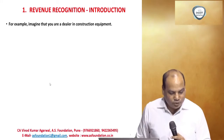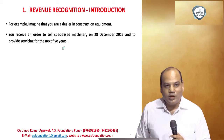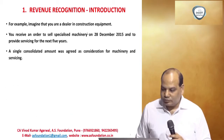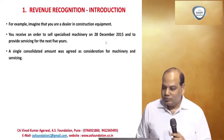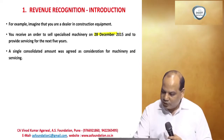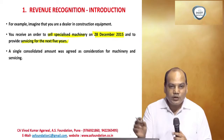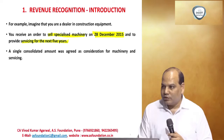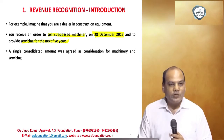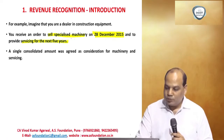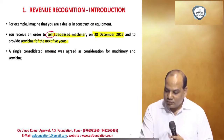For example, imagine you are a dealer in construction equipment. You receive an order to sell a specialized machine on December 28 and to provide service for the next five years. So on December 28 the company received the order to sell the machine and then provide services over the next five years. There are actually two transactions: sale of machine and provision of service. So you have two performance obligations.